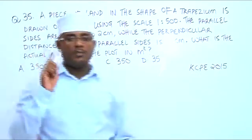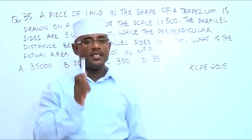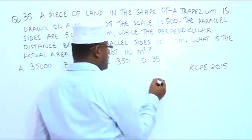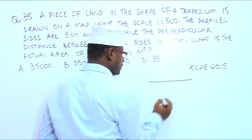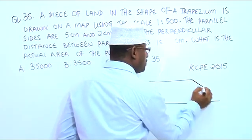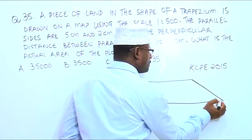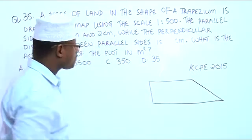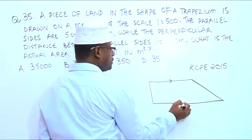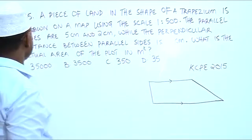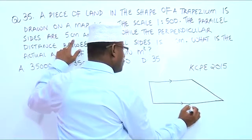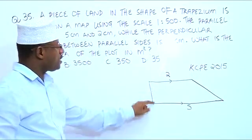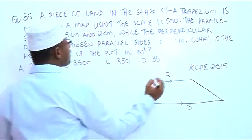What is the actual area of the plot in meters squared? We have a trapezium where two sides are parallel. We are told the parallel sides are 5 and 2 centimeters, while the perpendicular distance — meaning the distance between the two parallel sides — is 4 centimeters.